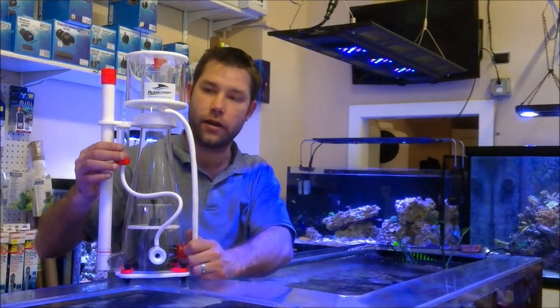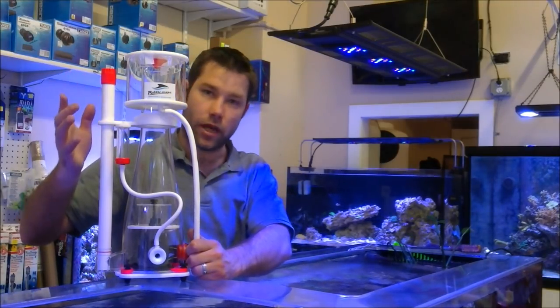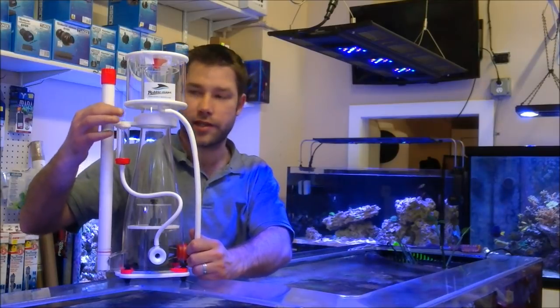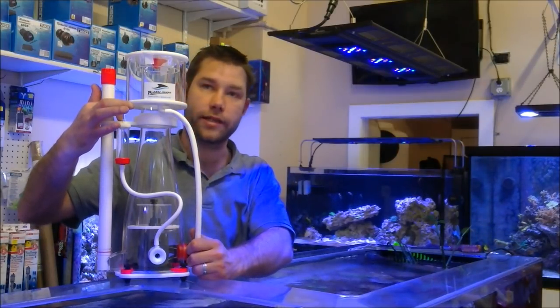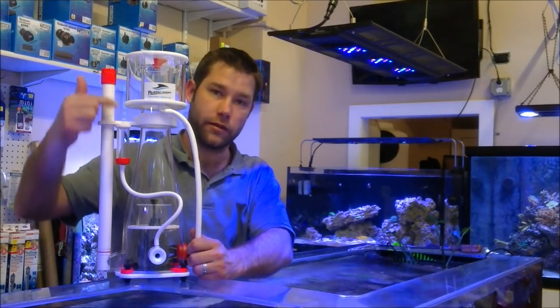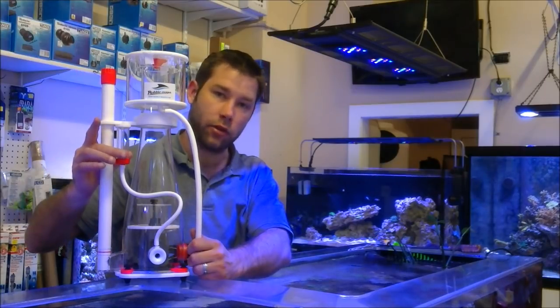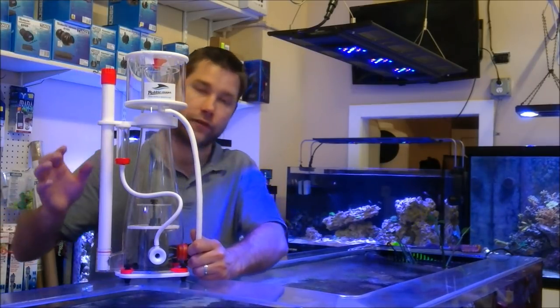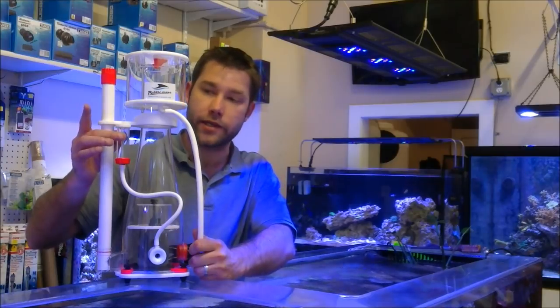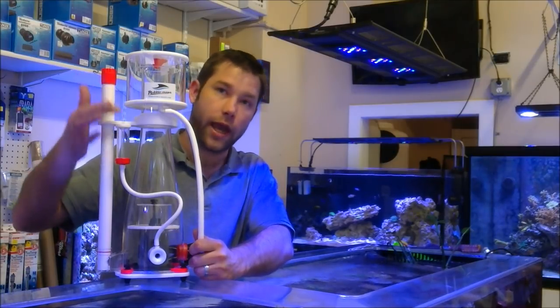Now, according to the picture, it shows the air silencer mounted up on top, sticking up this way. I mounted it down below because I'm not sure if this is a design flaw of Bubble Magus. It does work having it on the top.